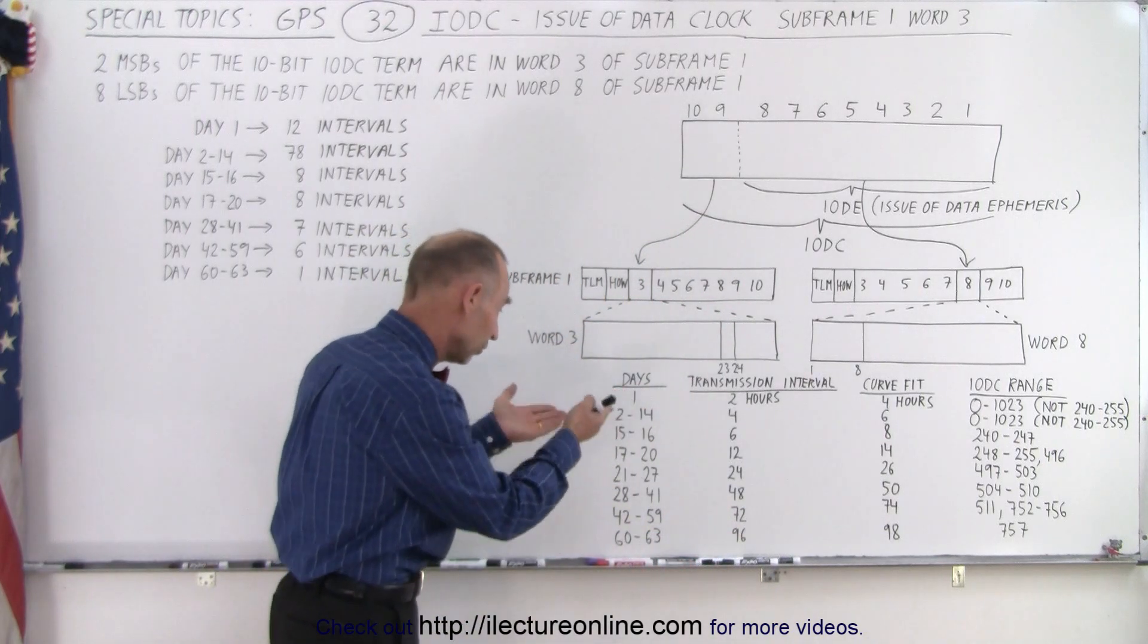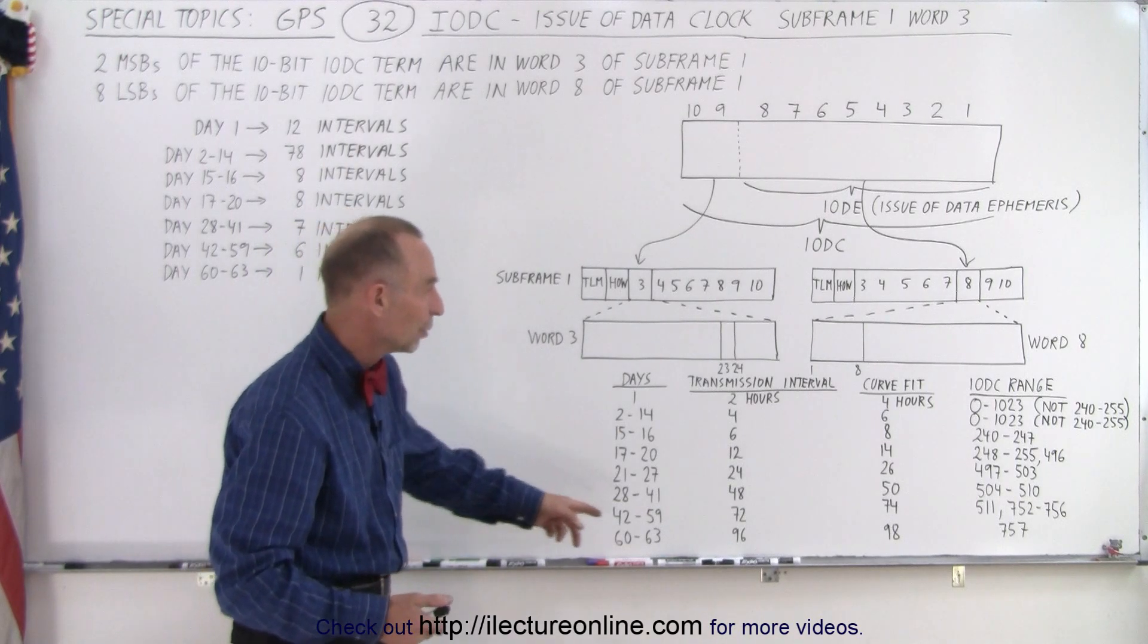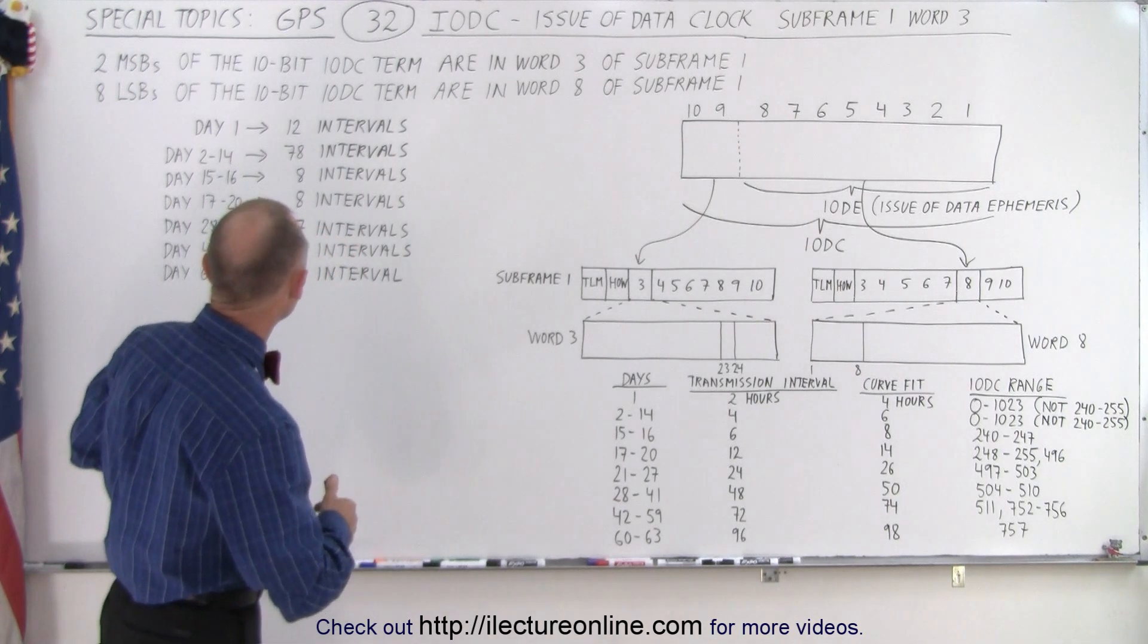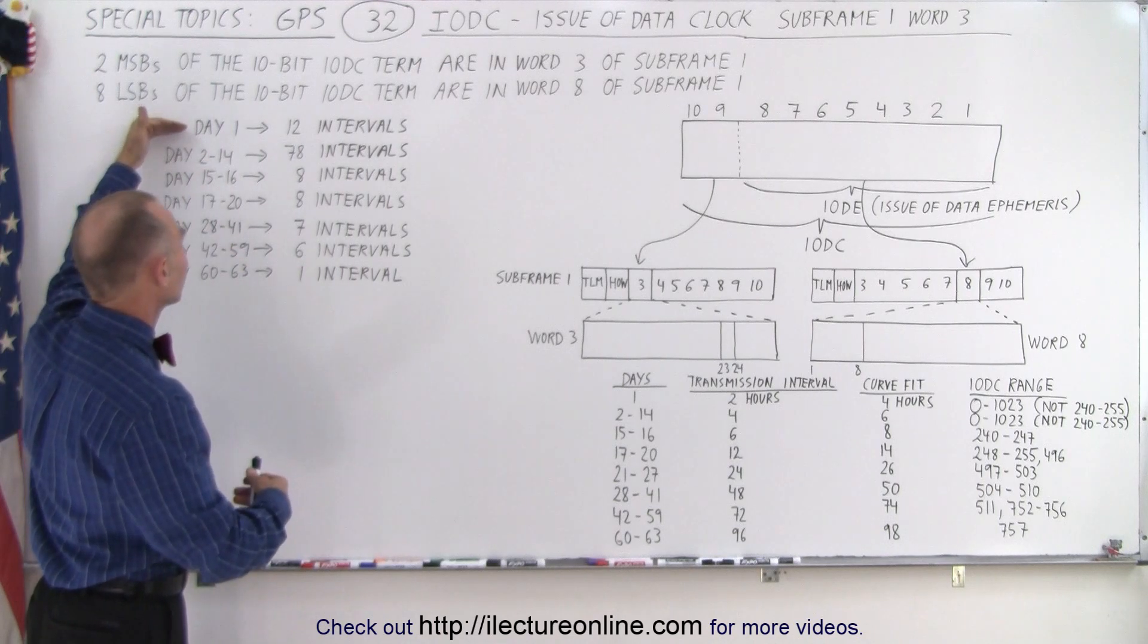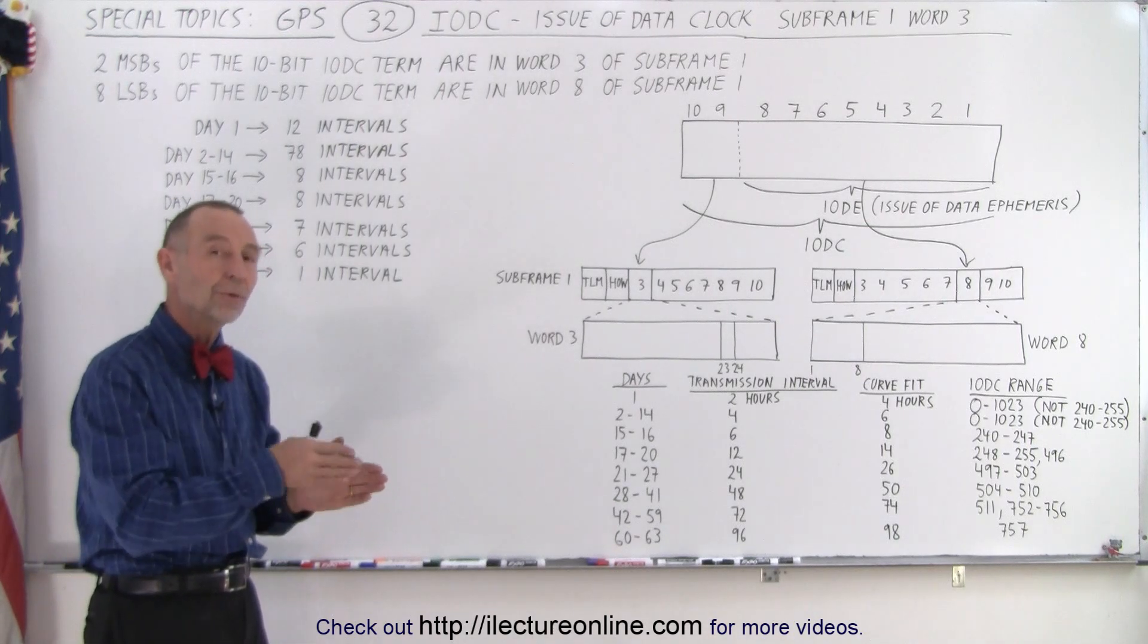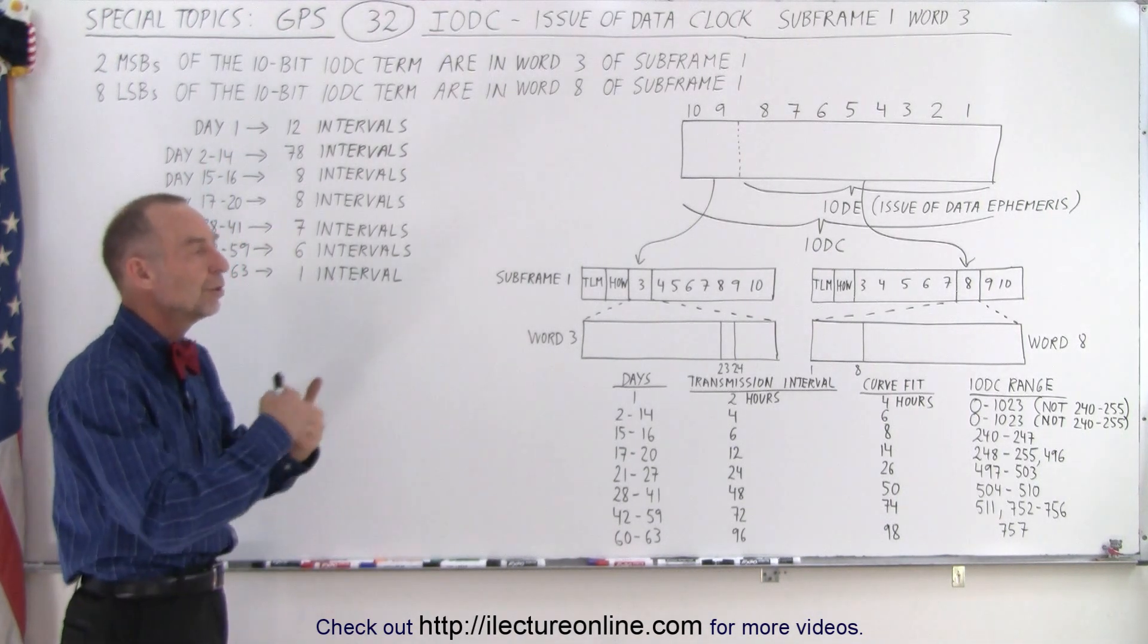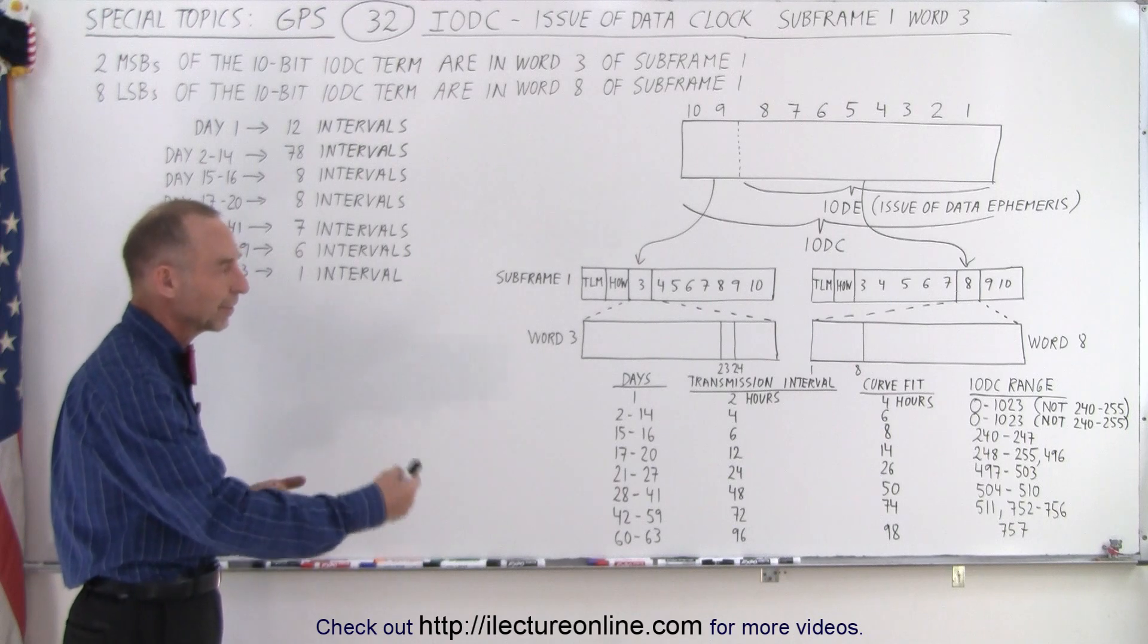So when the IODC number matches one of those, you know what transmission interval you're using, and therefore you know how aged the data is, and then you know how to curve fit it to how many hours out you can curve fit it. So it's simply telling you what data set you're using from the satellite, and notice that hopefully you only need to stay in day one, but notice that if you get new data every single time, you cannot use the same IODC number within a 7-day span. So you cannot reuse a number you've already used in the last 7 days, you have to use a new number, so it is possible that you get 12 intervals per day for a total of 7 days, but each time you have to use a new number rather than reuse a number. You don't get to reset back to zero just because you get a new data set every day. You need to then go to a different IODC number.